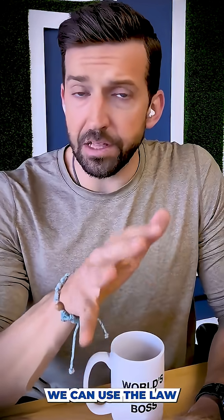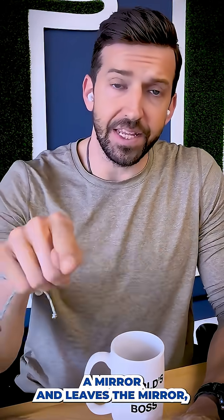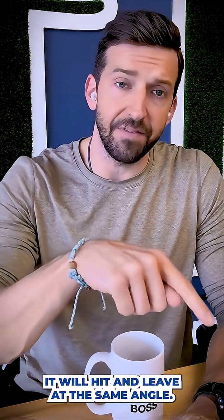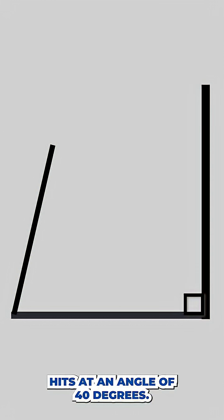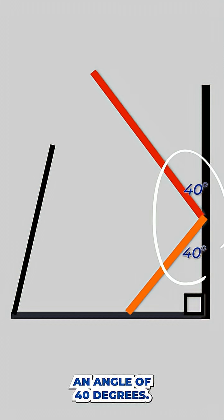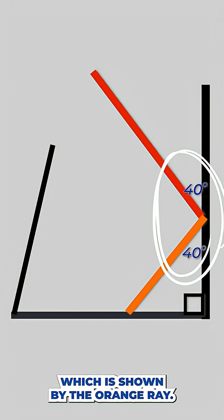Now note, we can use the law of reflection here, which states that when light hits a mirror and leaves the mirror, it will hit and leave at the same angle. So for example, this red laser beam hits at an angle of 40 degrees. That's why it exits the mirror also at an angle of 40 degrees, which is shown by the orange ray.